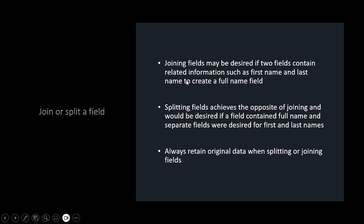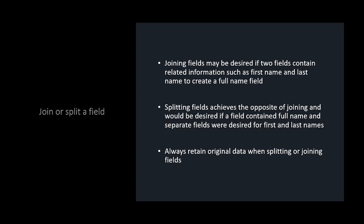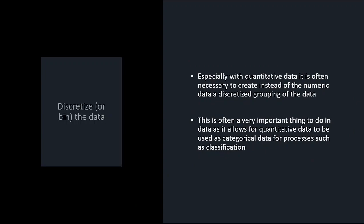Joining fields may be desired if you have first name and last name separate but want a full name column — this would be common for a mail merge label, for instance. Splitting fields is the opposite: maybe you have them combined and want to split into first and last names separately. Always retain the original data. Especially with quantitative data you often want to create groups — for heights, weights, or similar data, you can do basic univariate stats on the column, but for graphs and frequency distributions you really need to bin the data.